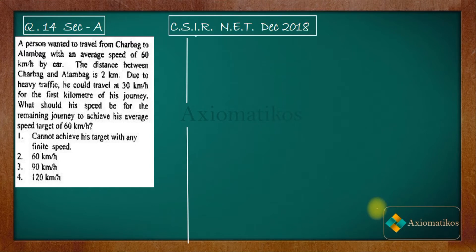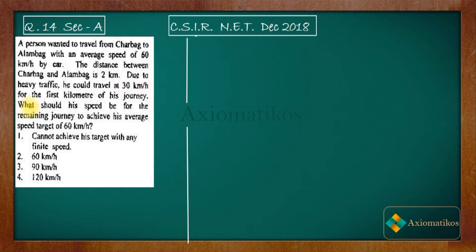Hello dear students, welcome to Axiomatic Course. This video is part of the solution series for CSIR NET December 2018, and we are solving problem 14 of Section A — a problem of general aptitude. A person wanted to travel from Charbagh to Alambagh with an average speed of 60 km per hour by car. Due to heavy traffic, he could travel at only 30 km per hour for the first kilometer. What should his speed be for the remaining journey to achieve his average speed target of 60 km per hour? I will explain this using a diagram.